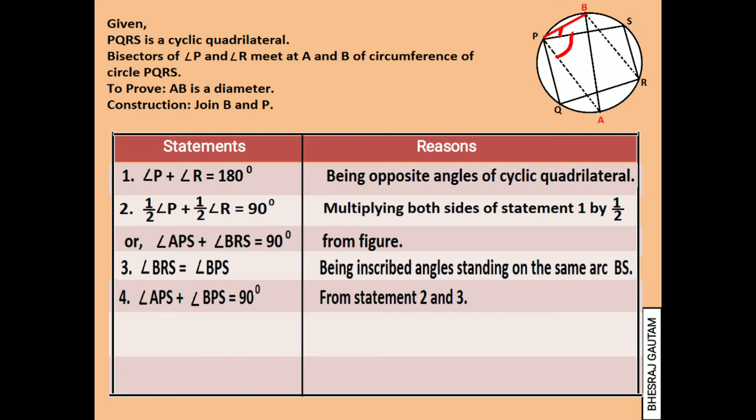As we see in the figure, angle APS plus angle BPS is equal to angle APB by whole part axiom. We can now write angle APB is equal to 90 degrees.